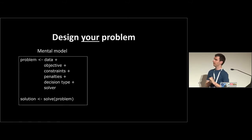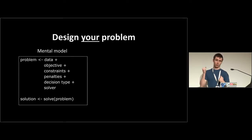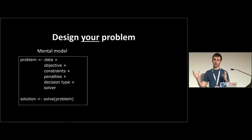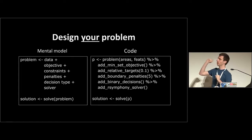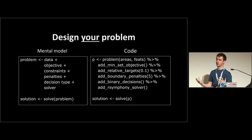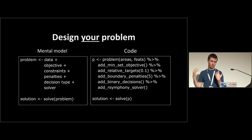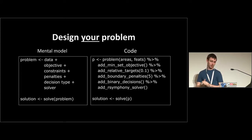Here's how we've conceptualized the idea of a conservation planning problem. We have data on areas we want to manage and data on biodiversity. We've got an objective, constraints, penalties, what kind of decision we're making, and then some solving software. We bundle it all together and get a solution — that's the mental model that underpins the package. In code, we start off defining a problem using data on areas and features — spatially-referenced datasets or data frames — then add functions to specify objectives, targets, penalties, decision types, and solver. Once complete, we solve it using a solve function.